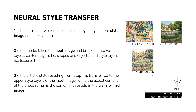Once the model is trained, we then feed an input image into the model, simply taken from our mobile device. The image gets broken into various layers. The deeper layers contain content such as objects and shapes, and the upper layers contain style such as textures and colors.